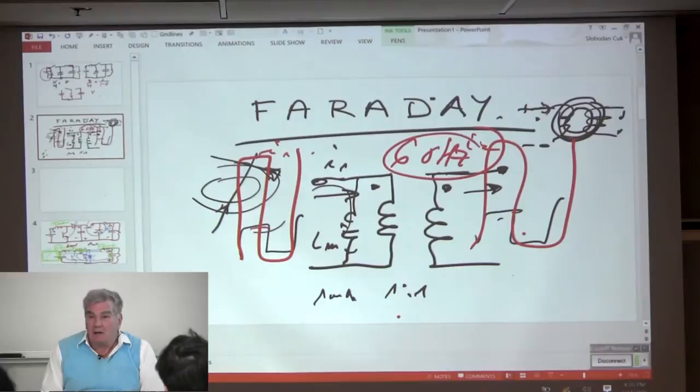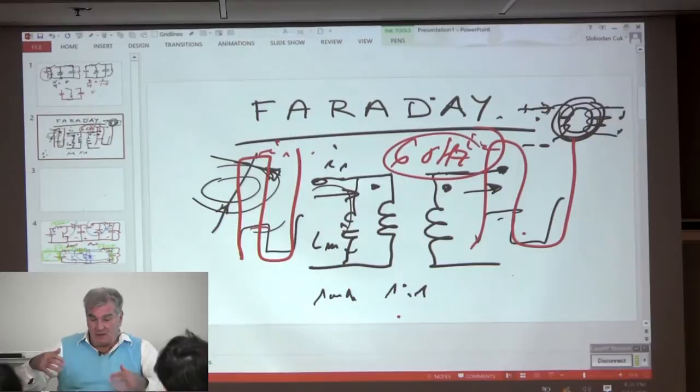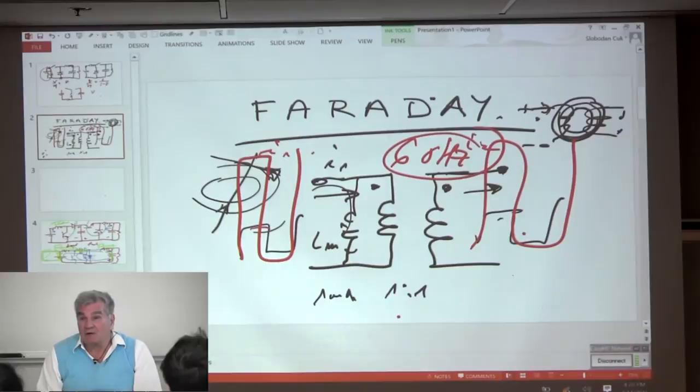Now you have Tesla induction motor which operates at 1.5 kilohertz, and 150 to 200 kilowatts is this big in cross-section. Because it's only 50 Hertz to 1.5 kilohertz, it's three times bigger in frequency.